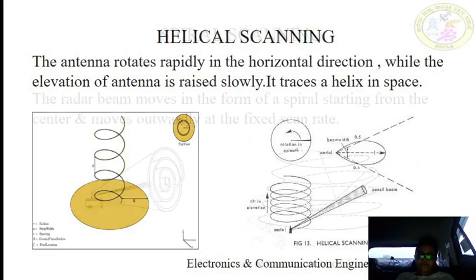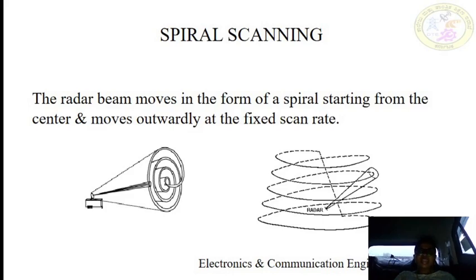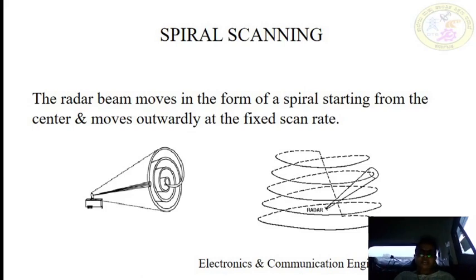In spiral scanning, the radar moves in the form of a spiral starting from the center and moves outward at a fixed scan rate. It is used for covering a limited area of circular shape. The antenna is at the center and starts from the center, moving in a spiral form, covering the whole area.